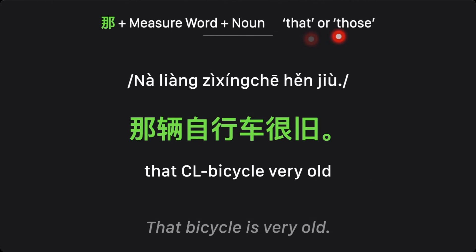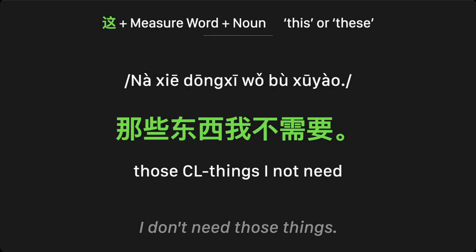Now, if you want to say 'that' or 'those,' substitute 这 with 那. For example, 那辆自行车很旧 — 'that bicycle is very old.' 旧 means old. Next, 那些东西我不需要 — 'those things, I do not need.' 些 is the plural classifier for multiple things. So 那些东西 is 'those things,' and 我不需要 is 'I don't need them.'